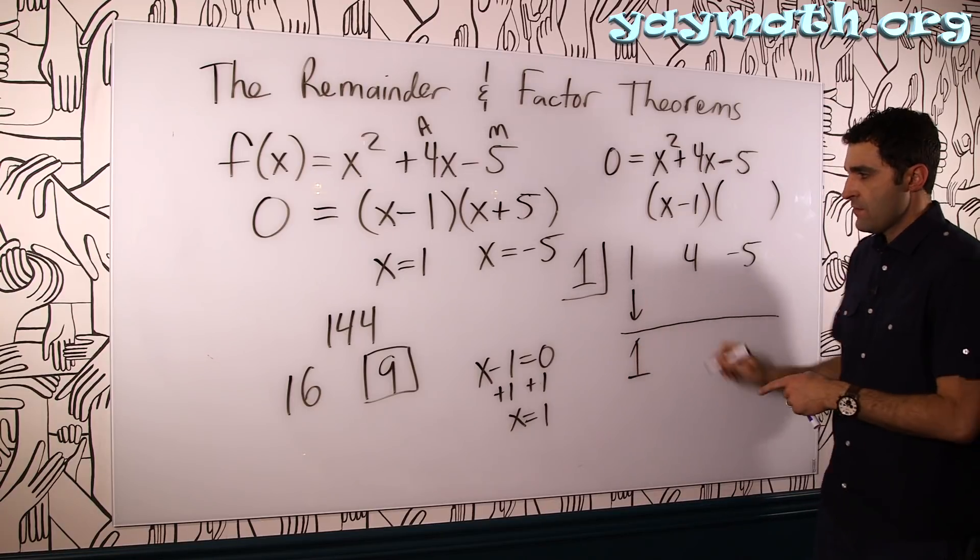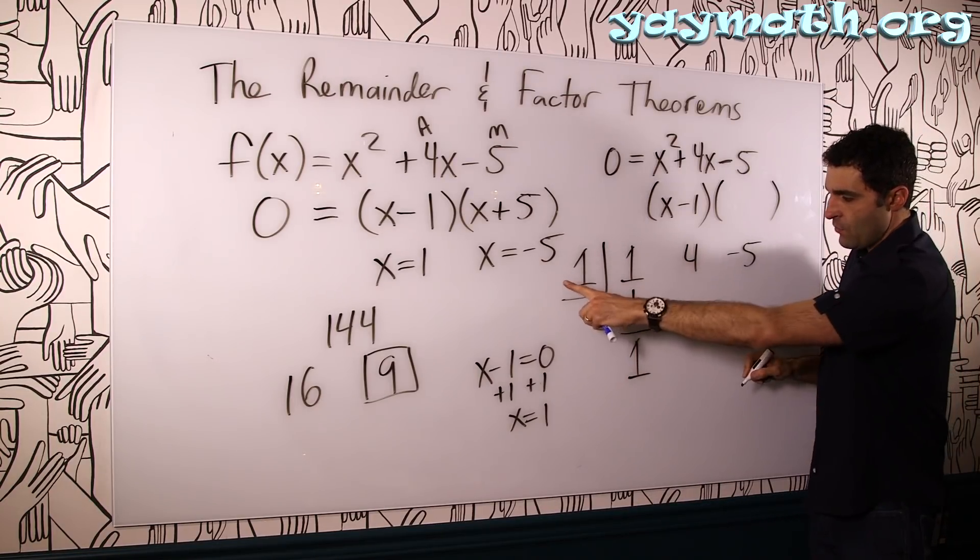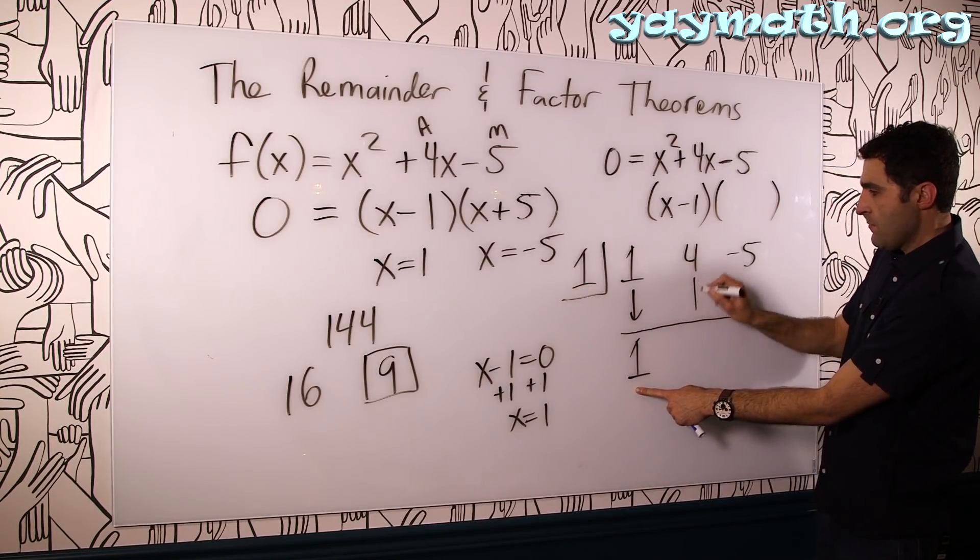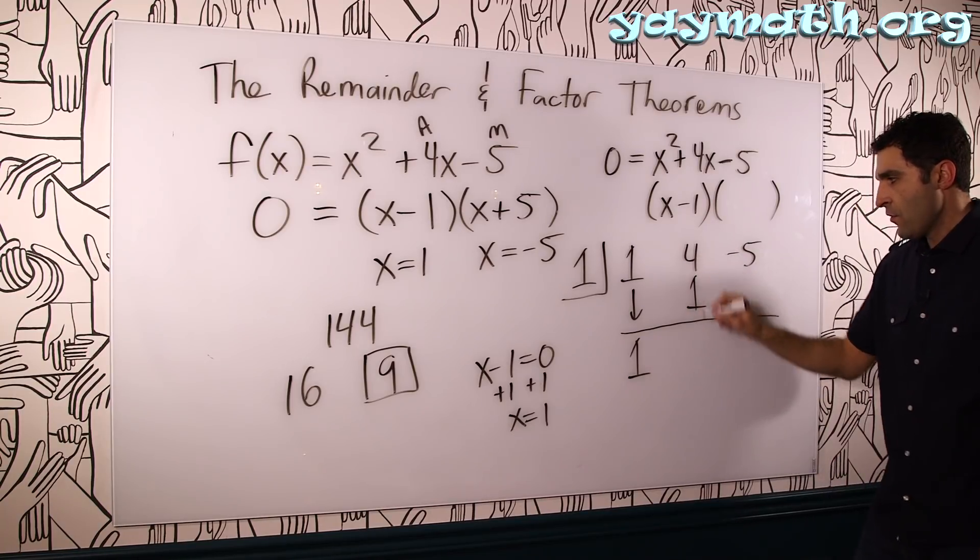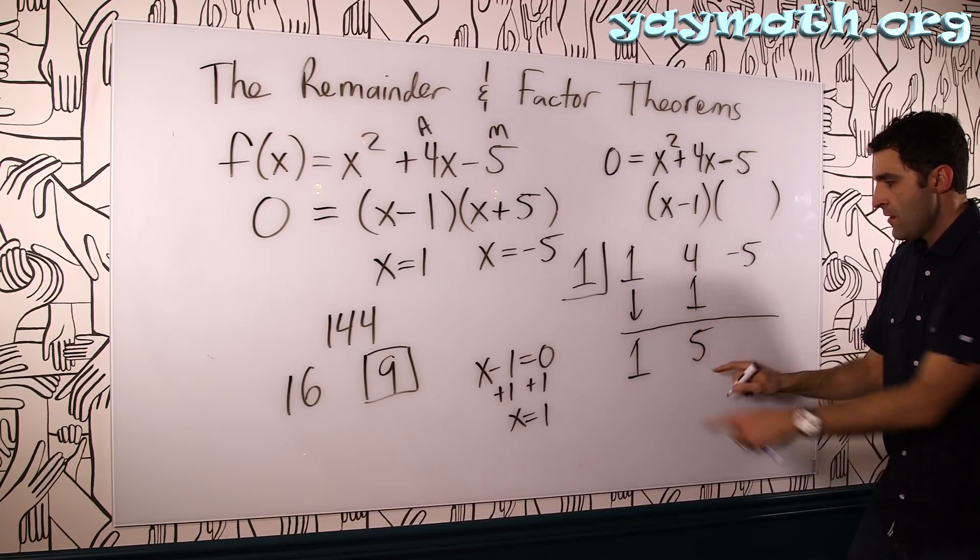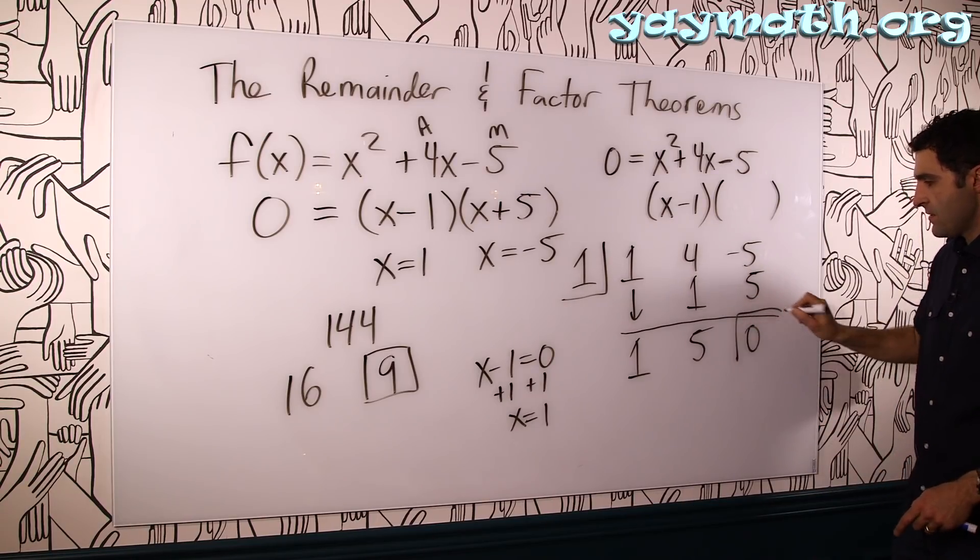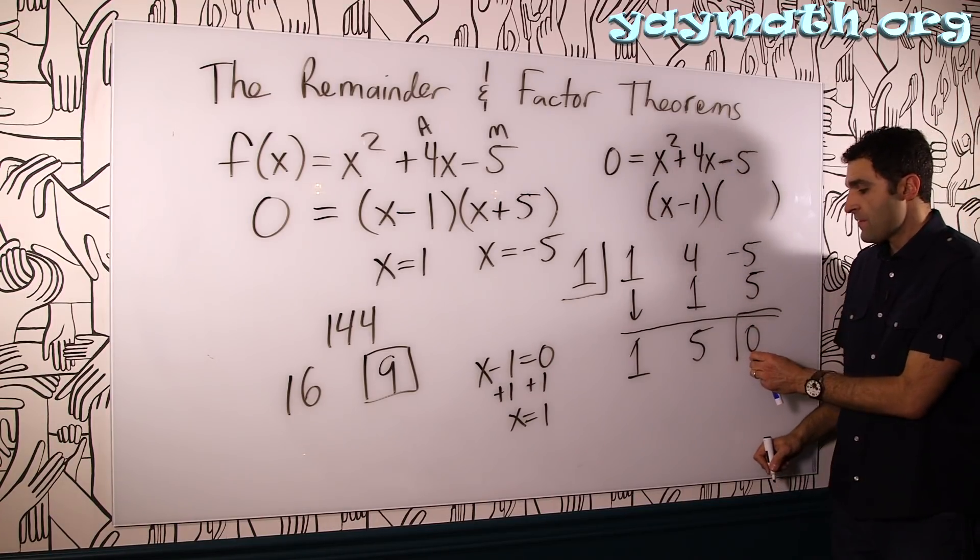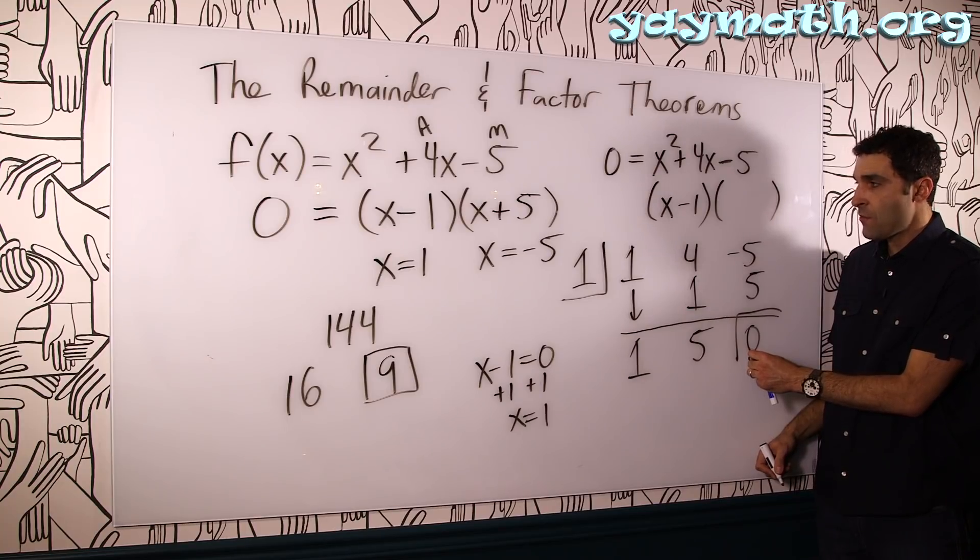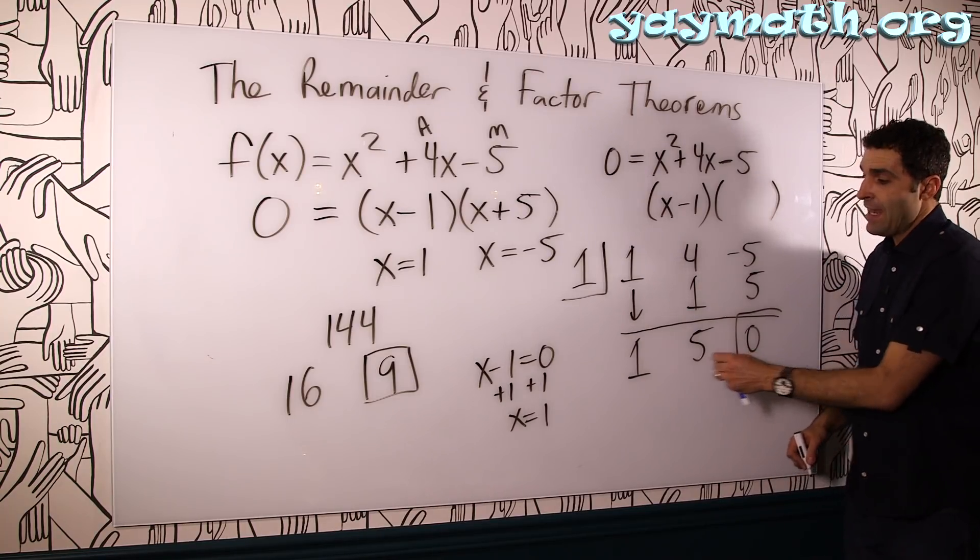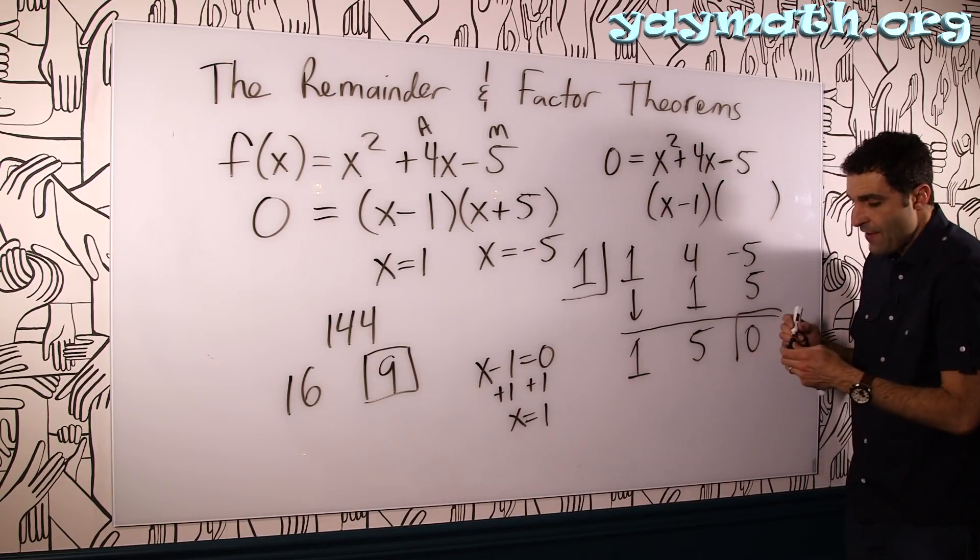1. Drop it. Drop it like it's hot. 1 times 1 is 1. Put that here. Add down. 4 plus 1 is 5. Multiply. That's 5. Add down. 0. This is the remainder. Of course, the remainder is 0 when something divides evenly. And here we have the remaining factor, right?